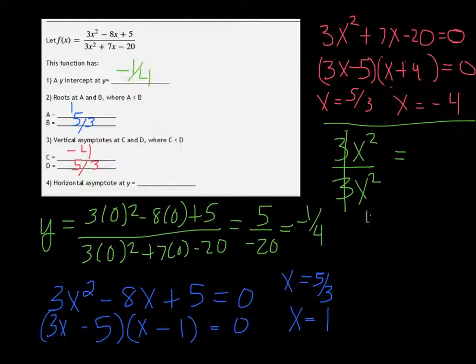...at y equals 1. Because 3 divided by 3 is just 1. So you're just looking at the leading coefficients of the top and the bottom, or the leading terms of the top and the bottom, and you take their coefficients, 3 over 3, which is 1.